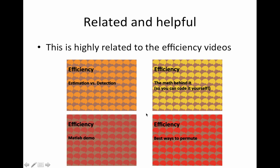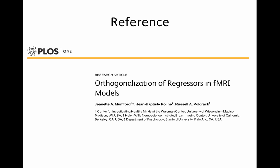This roughly follows a paper, orthogonalization of regressors in fMRI models. This paper has a Python notebook that goes along with it that illustrates some of these things. This was with Russ and JB.